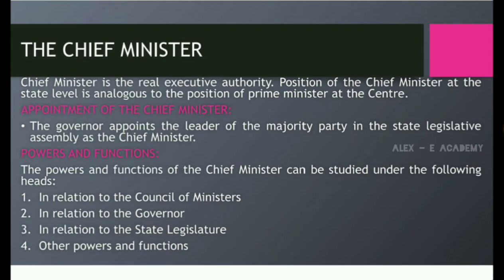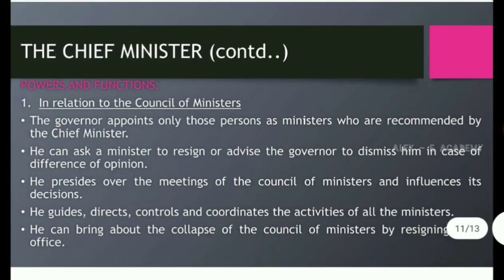Powers and functions of the Chief Minister. First, in relation to the Council of Ministers: the Governor appoints only those persons as ministers who are recommended by the Chief Minister. He can ask a minister to resign or advise the Governor to dismiss him in case of difference of opinion. He presides over the meetings of the Council of Ministers and influences its decisions.